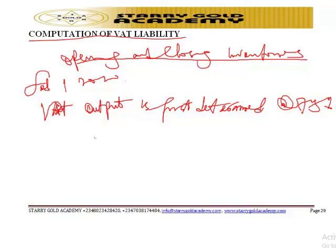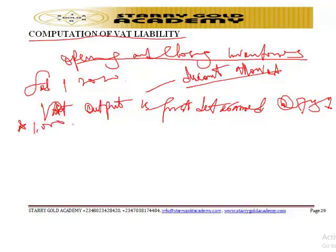Examples of allowable sales adjustments include discounts allowed to customers. So if your total sales is 1,000 Naira and you give a discount of 100 Naira, your net sales is 900 Naira, and you compute your VAT output on 900 Naira — that is 7.5 percent of 900 Naira.